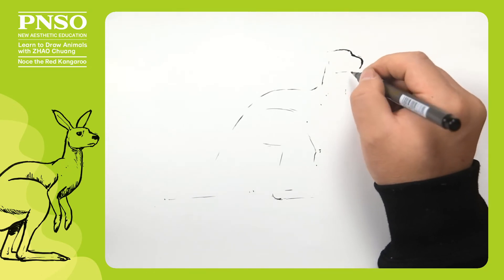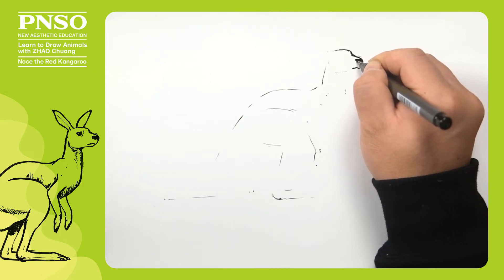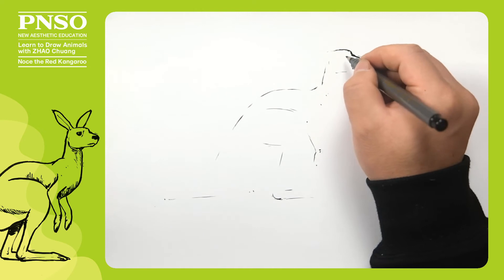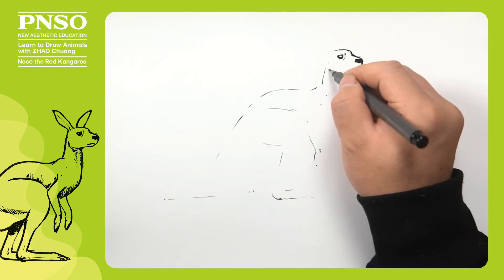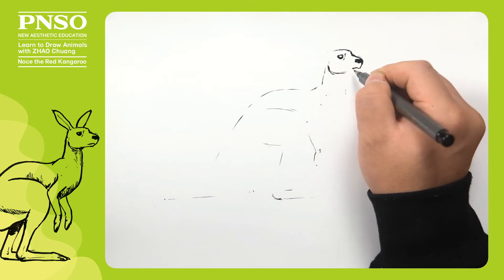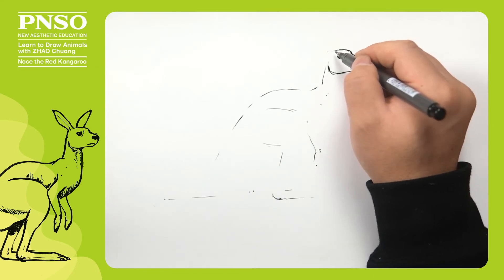The red kangaroo has a square nose and a very small mouth. Its nasal tip is a wide black triangle. Let's draw its big eyes here. Now let's draw its square face.